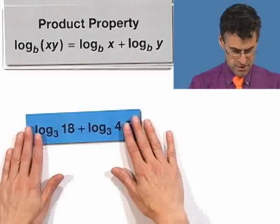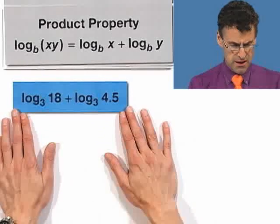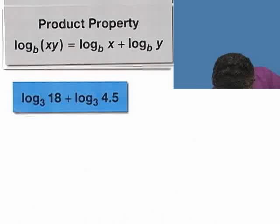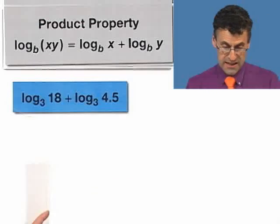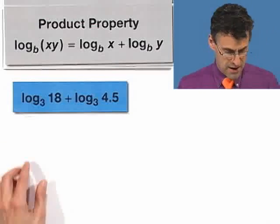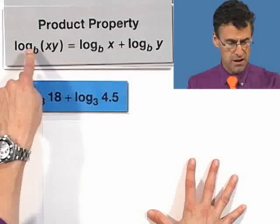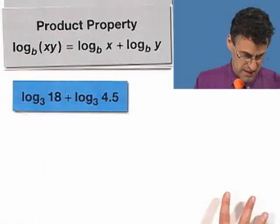So now, armed with these properties, I want us to take a look at how we can actually use them to simplify expressions that are logarithmic in nature. So log base 3 of 18 plus log base 3 of 4.5. Now, this sounds really hard. And it is until we realize that really what we see is the sum of logs. And the sum of logs can be written as the log of a product.